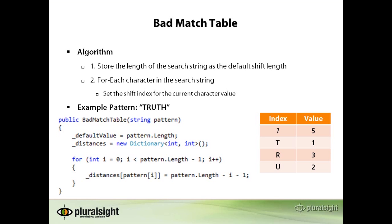So let's work through the word 'truth'. The first pass adds the value t to the table — t being the first letter in the word truth. It gets the index value of 4, because the pattern length is 5, minus i, which the first iteration is 0, minus 1. So 5 minus 0 minus 1 is 4. Next, we add the value r with an index value of 3. In this case, i is 1, pattern length is still 5, so it's 5 minus 1 minus 1. U gets added with the index value 2. And now we encounter t again. This time the value for t is 1 — pattern length of 5 minus index 3 minus 1 — so we overwrite the value 4 in the table and insert the value 1.